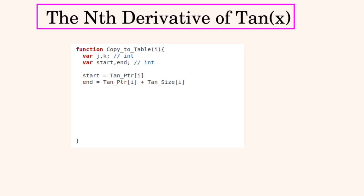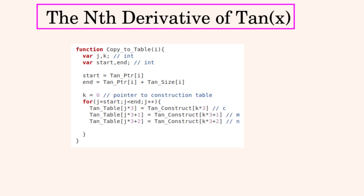Here's the function to copy the next derivative from the construction array into the table array. We get the start and end of the table, make a loop to go through every term to be copied, and copy them across using different indexing terms. We increment the construction array indexing variable separately since the for loop can only index one variable at a time and is already indexing the table variable.